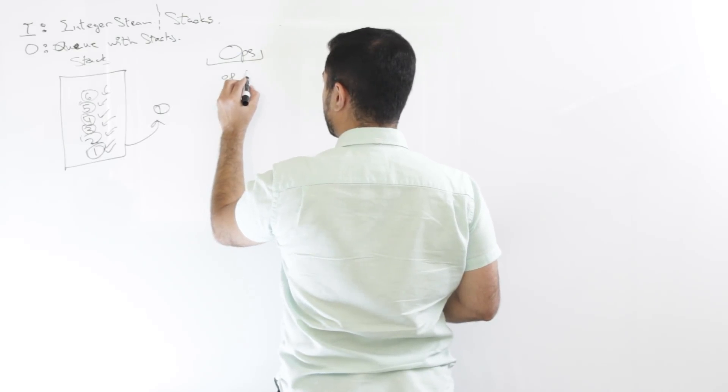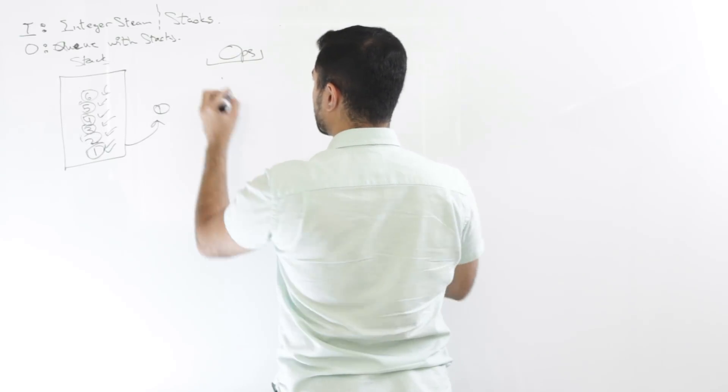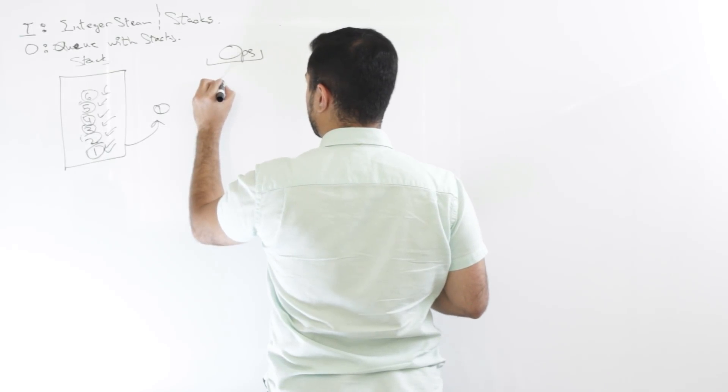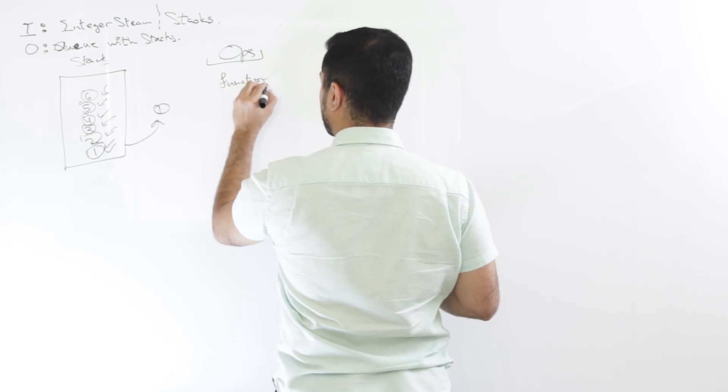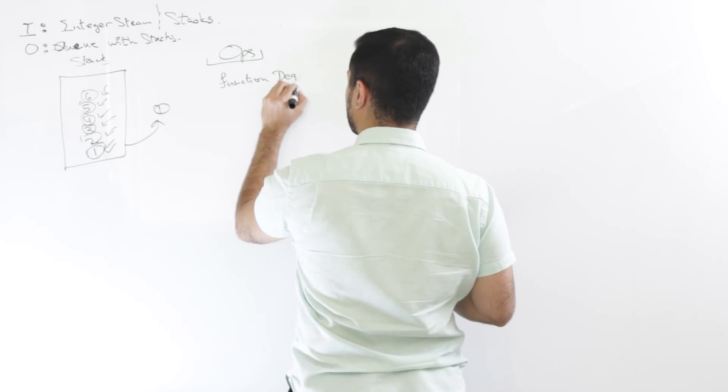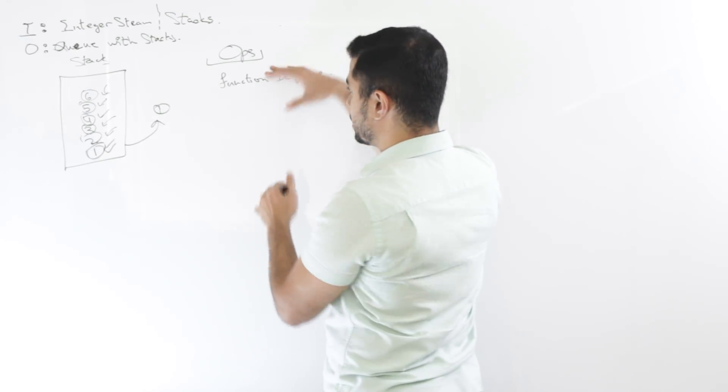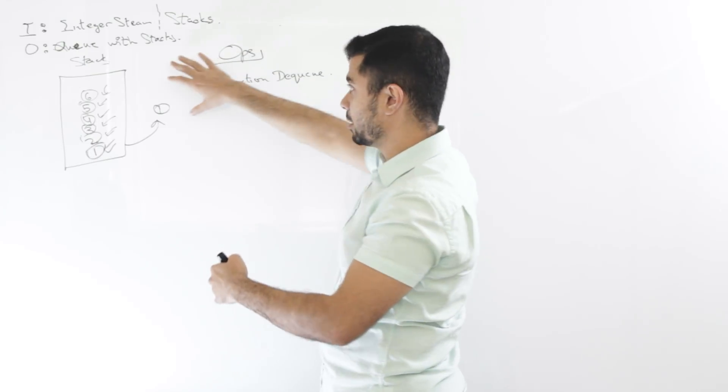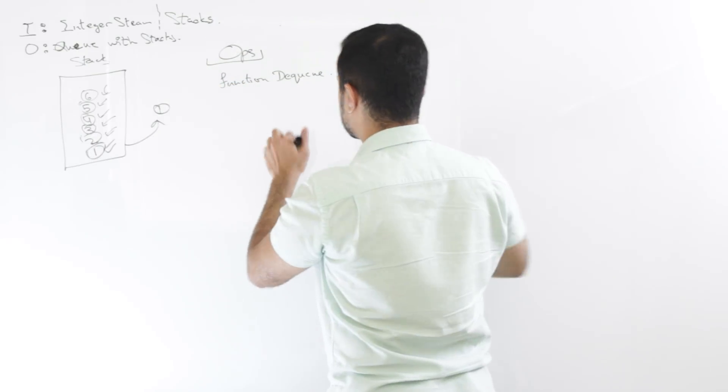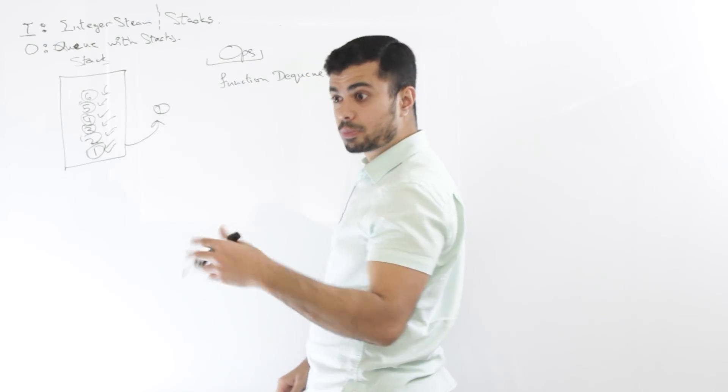Mm-hmm. So one of the properties of the stack would then be length as well. So I'll say if, so let's say there's a function, right? So this is, let's say, function DQ. And let's say this is inside of the scope of a bigger class or a bigger function that already has the stack in it.